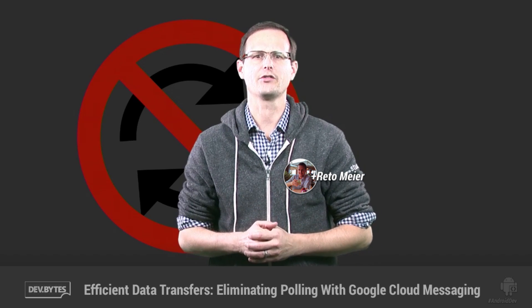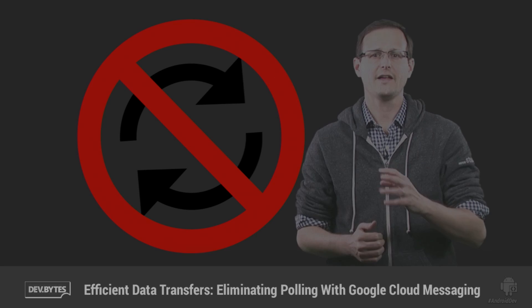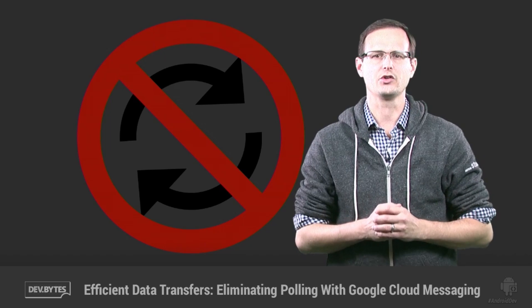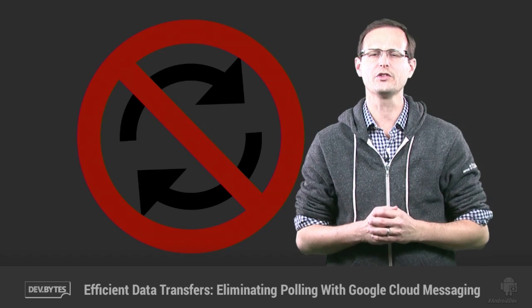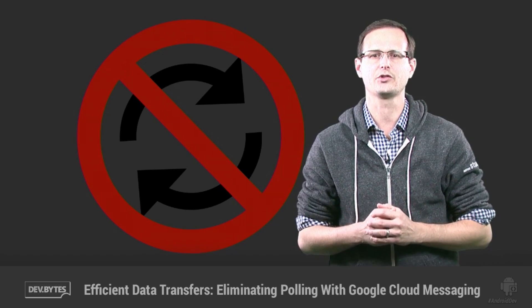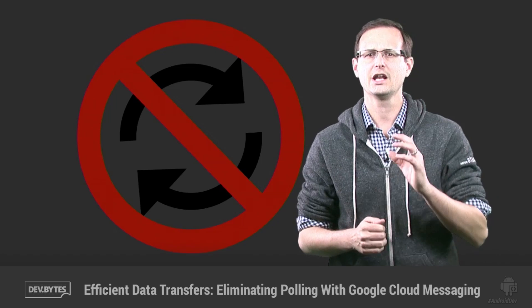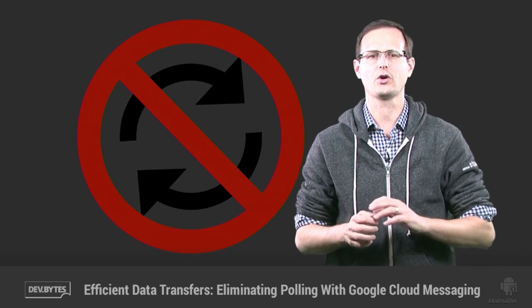One of the most effective ways you have at your disposal for optimizing the efficiency of your data transfers is eliminating user-driven updates. That means doing everything you can to eliminate the refresh button within your app. The most common reason people hit refresh is because they don't believe your app is displaying up-to-date information. And if you're using some form of client-side polling, they're probably right.